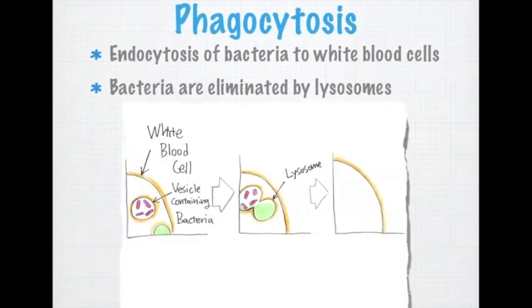Now, when endocytosis happens between a white blood cell and harmful molecules like bacteria, the process is called phagocytosis. As soon as the bacteria enters the cell and forms vesicles, another vesicle, called lysosomes, which contain digestive material that can dissolve the bacteria, fuse with the bacteria vesicles and destroy them.